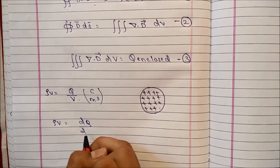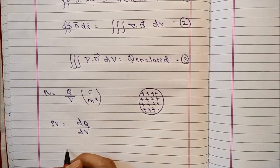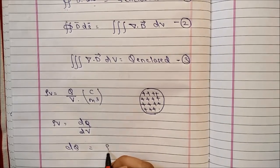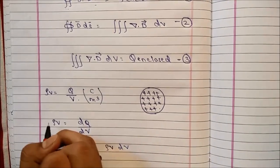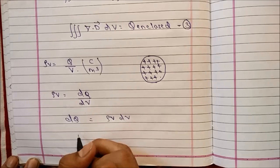Taking differentiation, dQ by dV, so dQ is equal to rho_V times dV. I am just taking dV to the other side.